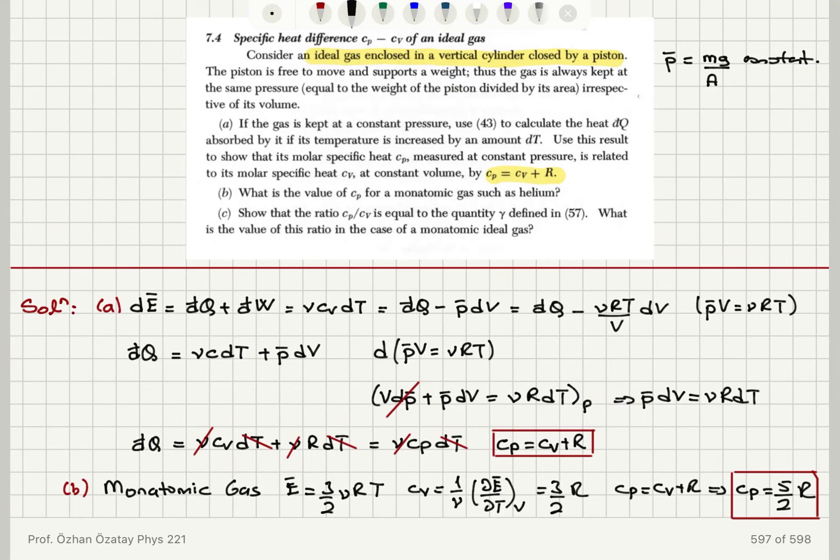And the change in the internal energy is always equal to nu cv dt. Because at constant volume, if you consider dE bar, it is nu cv dt minus p bar dV. If you do this at constant volume, this part disappears and you find that the infinitesimal change is nu cv dt. And this is for a constant volume process but the internal energy change is independent of the process. Internal energy is a state variable. So nu cv dt is always correct for the internal energy change.